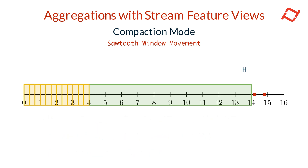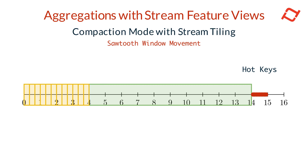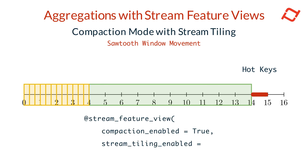This balance between small tiles at the tail and large tiles for most of the data helps maximize performance and storage efficiency without sacrificing data quality and freshness. However, this approach could still be inefficient for hotkeys with a very high volume of events, since we need to aggregate untiled raw event data at the leading edge. In such cases, reading and aggregating even 24 hours of stream data can result in poor performance. To address this, Tekton introduces a technique called stream tiling.